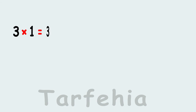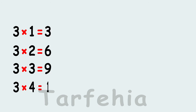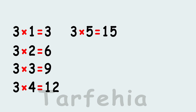Three times one equals three. Three times two equals six. Three times three equals nine. Three times four equals twelve. Three times five equals fifteen.